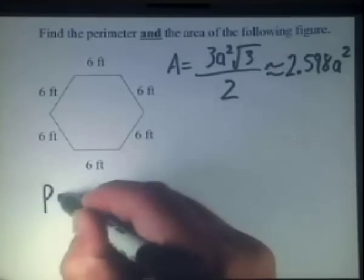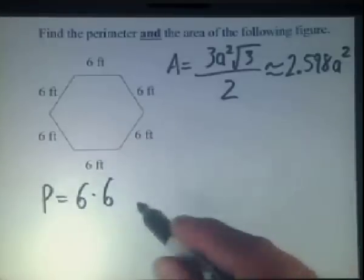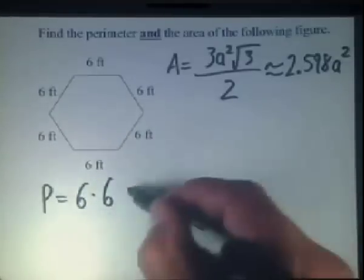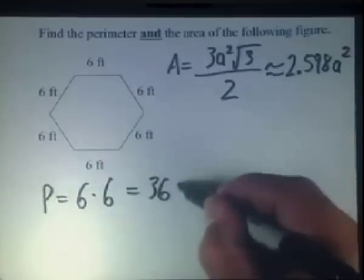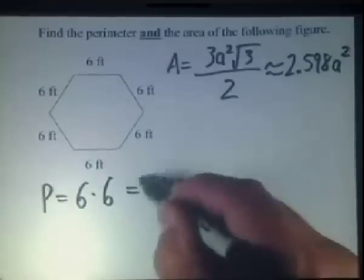So we can say the perimeter is equal to 6 times 6, or from this come up with 36 feet. That's the perimeter.